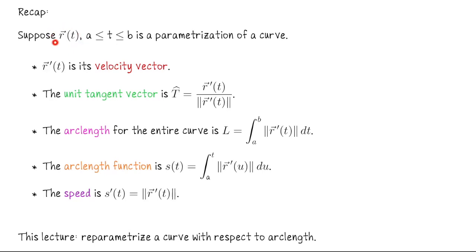First off, we have these vector-valued functions r of t, where typically we have t going from say 0 to 4 or something like that, so t is going from some value a to some other value b. And what these vector-valued functions are doing is parametrizing curves, typically space curves in R3, although we can also do this in R2.